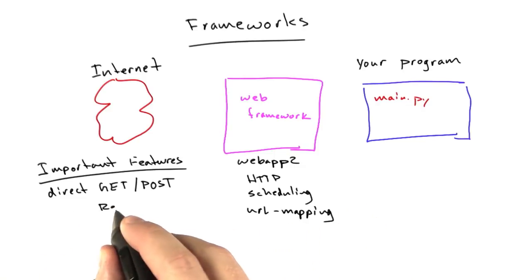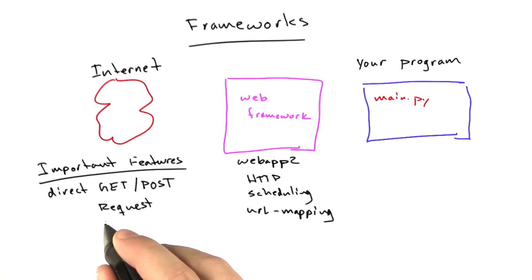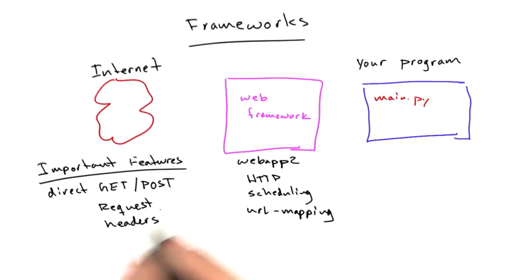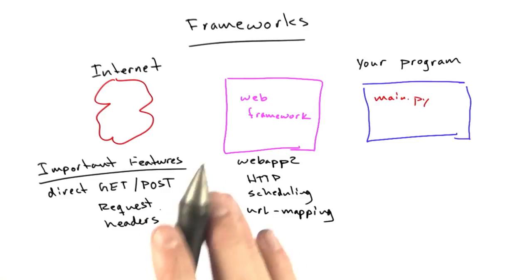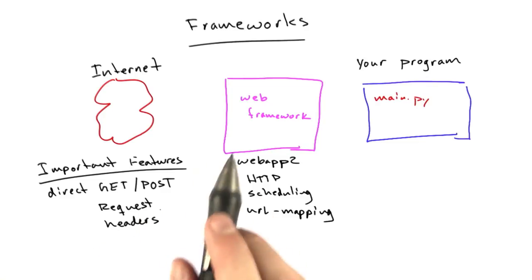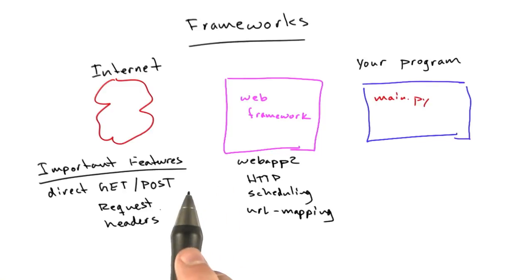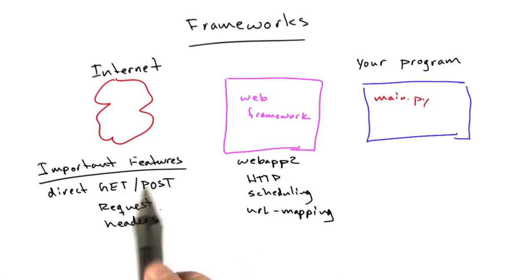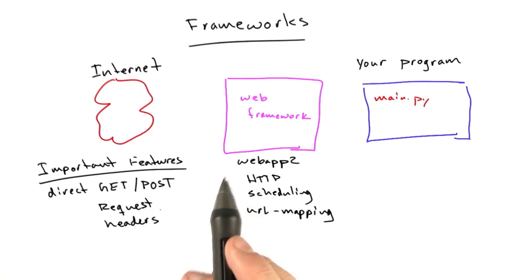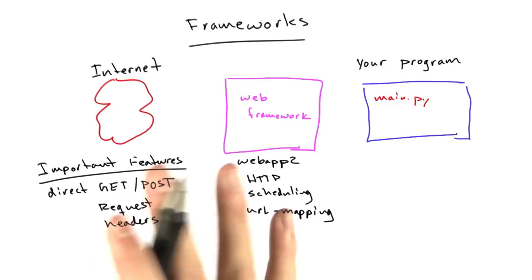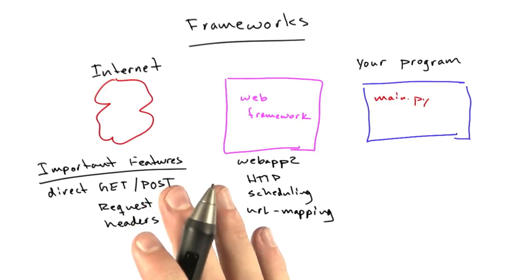We've got direct access to the request — things like headers. There are convenience functions for setting cookies and getting cookies, but you can also manipulate the headers directly. Sometimes you want to do something with content type or content length, and if the web framework doesn't let you do that, it can be really frustrating and you can't build a site the way you want to. So I find this kind of low-level stuff is really helpful.